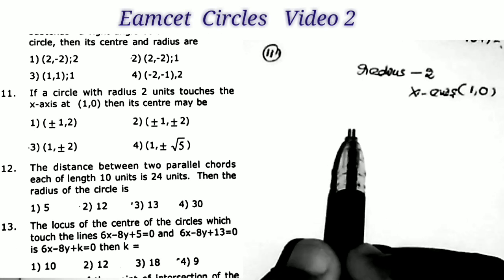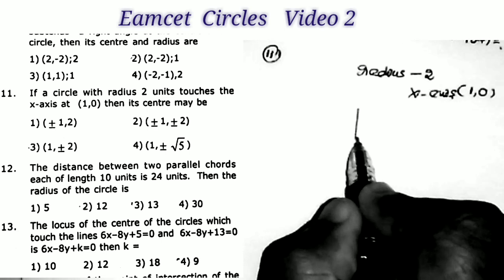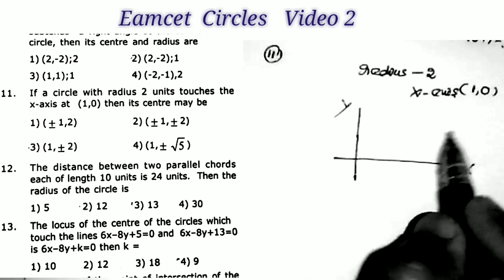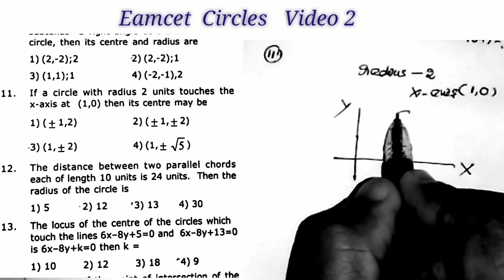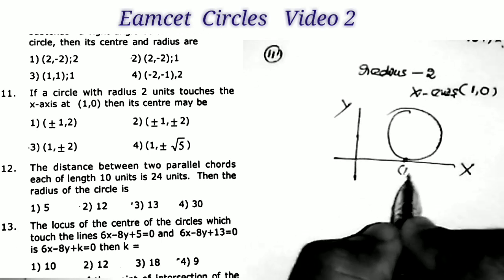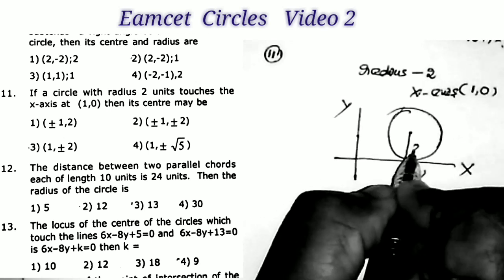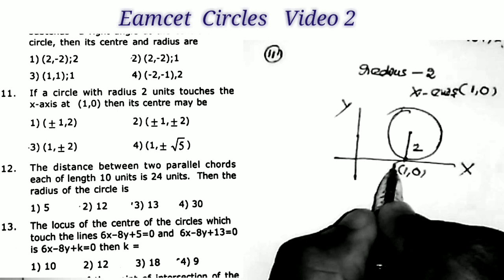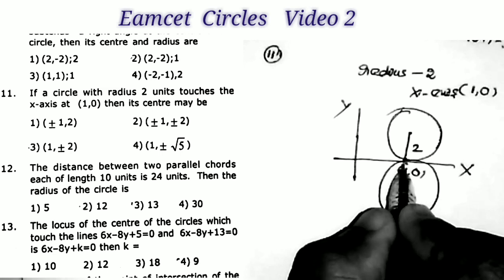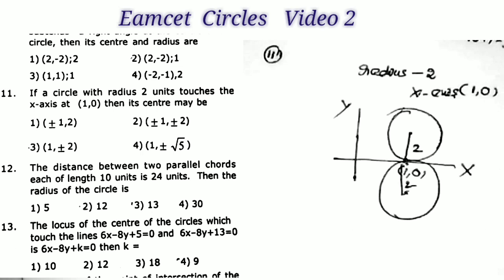Sum number 11: If a circle with radius 2 units touches the x-axis at the point (1, 0), then what may its center be? Since the circle touches the x-axis at (1, 0) with radius = 2, we can draw two circles satisfying this condition — one above and one below the x-axis.